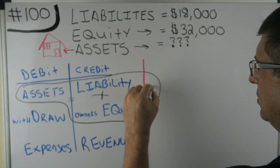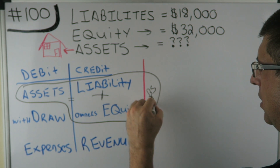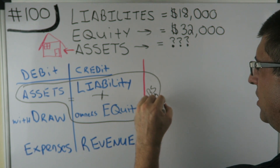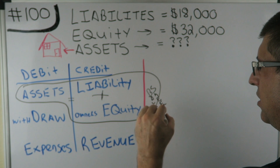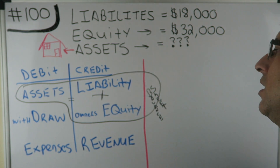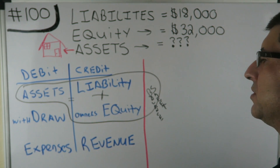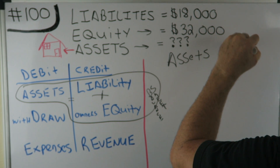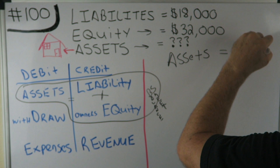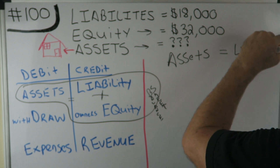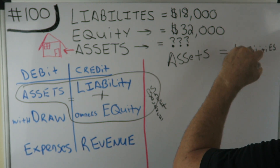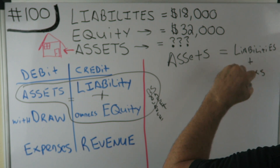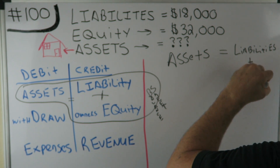You can say 'balance sheet.' I don't want to abbreviate because you'd be like 'B.S. — that's for bullshit.' No, it's for the balance sheet. So assets equal liabilities plus owner's equity.